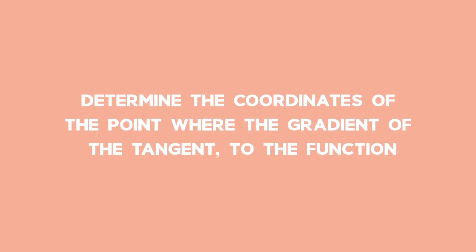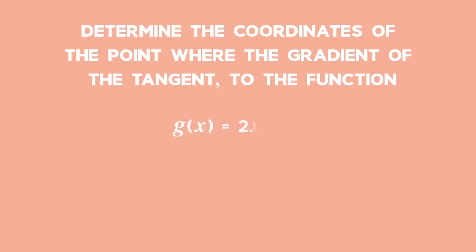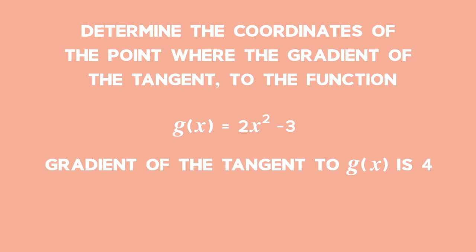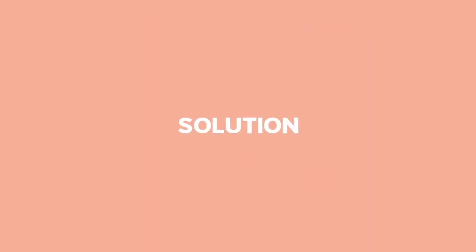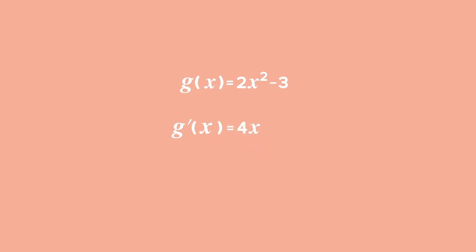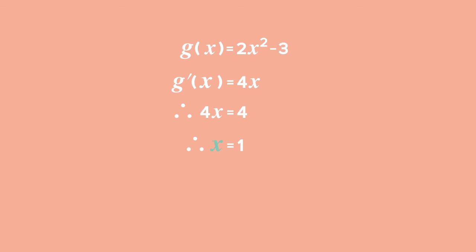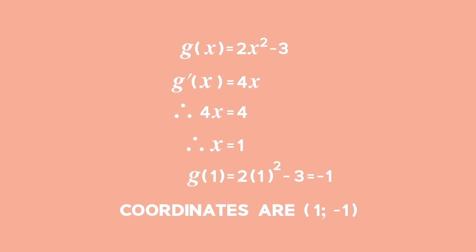Example 3: Determine the coordinates of the point where the gradient of the tangent to the function g(x) = 2x² − 3 is equal to 4. Solution: g(x) = 2x² − 3. Find the gradient function: g′(x) = 4x. Equate the gradient function and the gradient of the tangent and solve: 4x = 4, so x = 1. Substitute x = 1 into g(x): g(1) = 2 × 1² − 3 = −1. The coordinates of the point of contact are (1, −1).